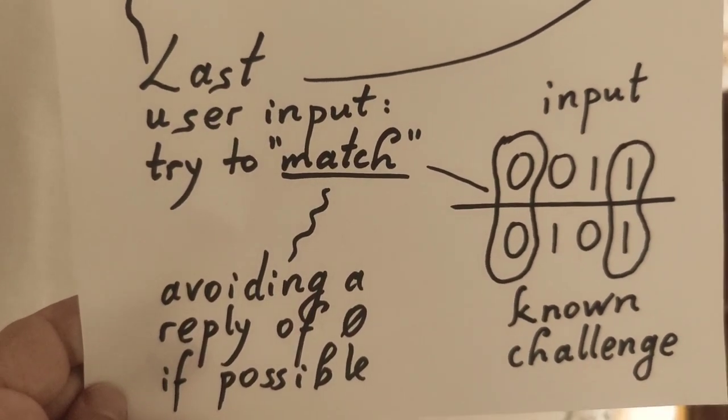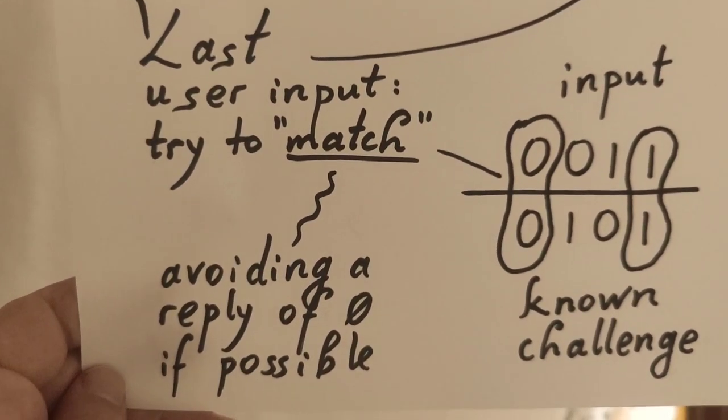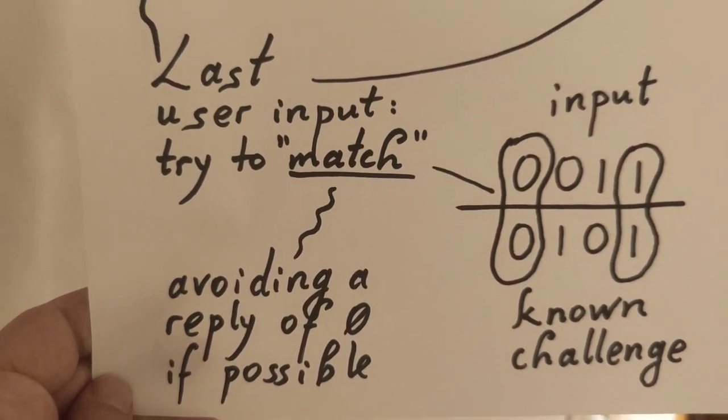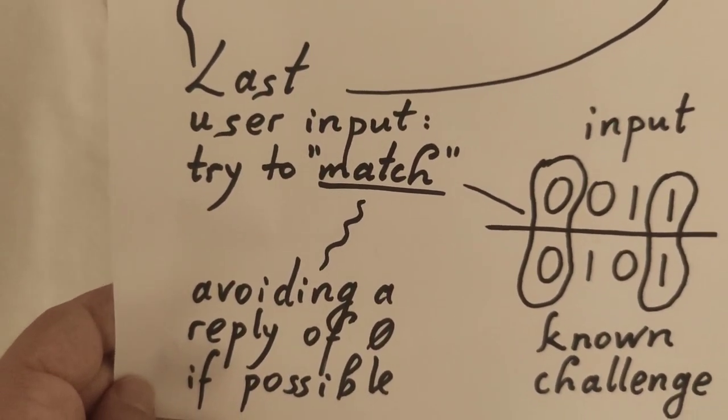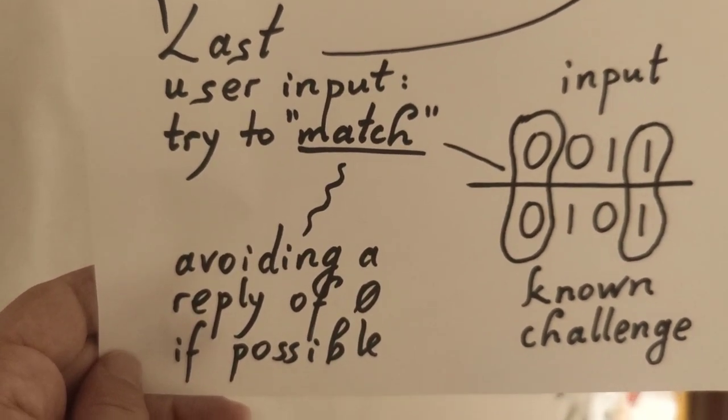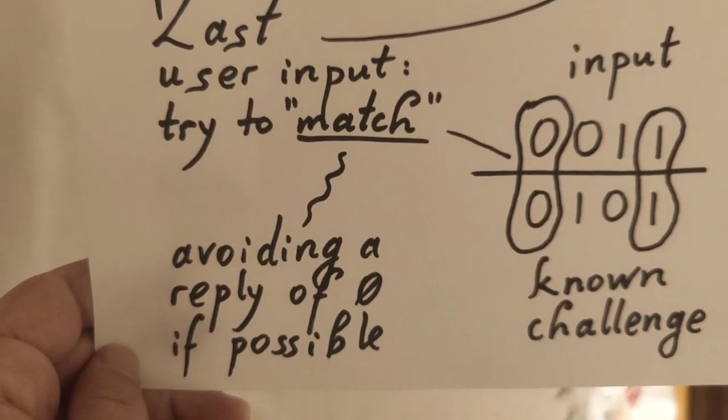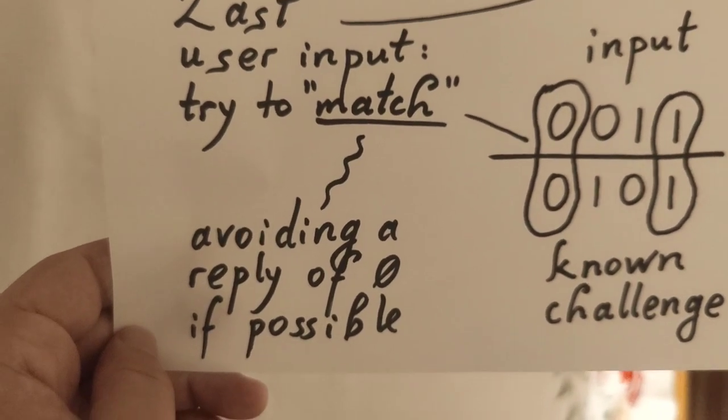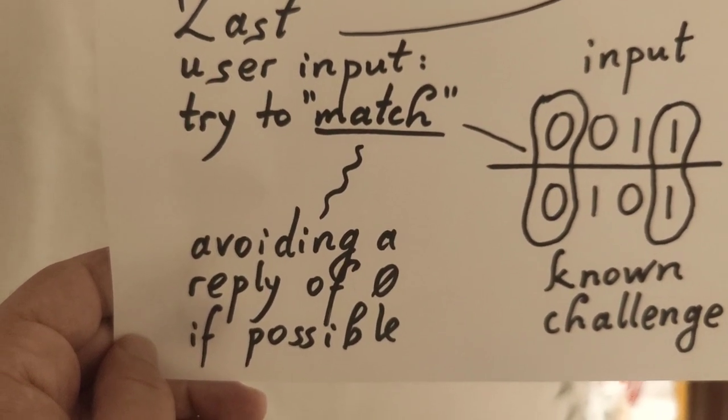Only one little trick was necessary in order to... Actually, two tricks in order to get the thing run more smoothly. And that is to let the system, if possible, try to avoid a reply of zero. Okay?